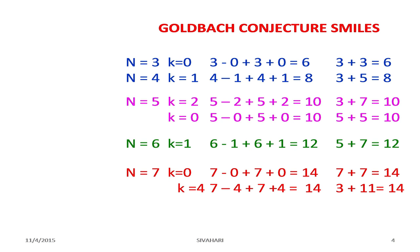n equals 6 has one option: k equals 1, giving 6 minus 1 plus 6 plus 1, that is 5 plus 7 equals 12. 5 and 7 are prime numbers. n equals 7 gives two options: 7 plus 7 equals 14, and 7 minus 4 plus 7 plus 4 equals 14, that is 3 plus 11 equals 14.